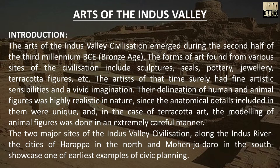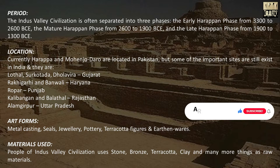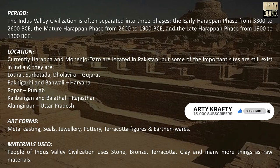The two major sites of the Indus Valley Civilization are Harappa in the north of river Indus and Mohenjodaro at the south of the river.